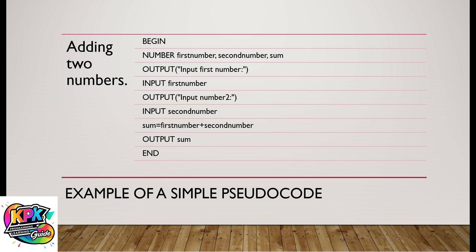This is a pseudocode for adding two numbers. Pseudocode is a way of representing an algorithm, as we've already stated. Since pseudocode represents an algorithm, it is supposed to be finite — it should have a beginning and then an end — clear, unambiguous, and supposed to provide a solution to our problem.